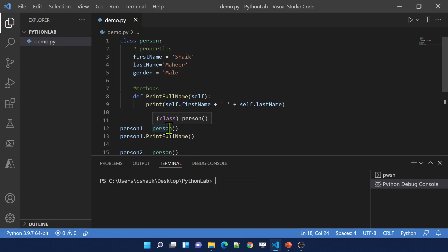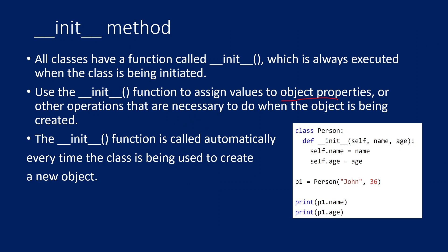Is it possible to set those values while constructing the object itself? The answer is yes. Whenever any class tries to construct any object there is a built-in function which gets called automatically, and that function name is the __init__ function. This __init__ method is called every time any new object is going to be created. Whatever you want to do at object creation time, you do it there.